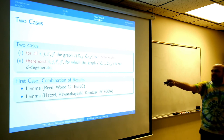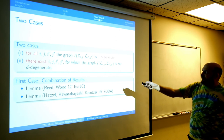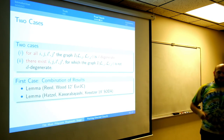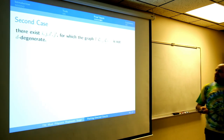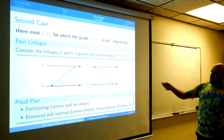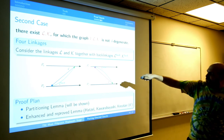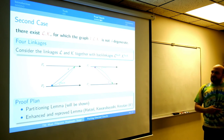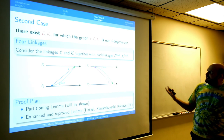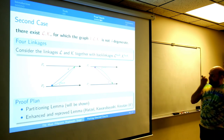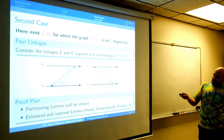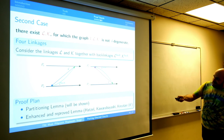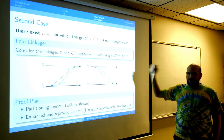The other case is that there exist some pair of linkages — indices i, j, i', j' — for which the intersection graph is not d-degenerate, meaning it's quite dense. In that case, we disregard the rest of the graph and find the partition into a sufficiently dense subgraph inside just those two linkages, together with the paths they lie on and corresponding linkages back.